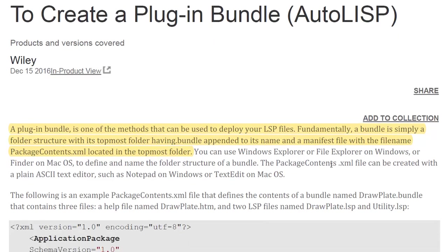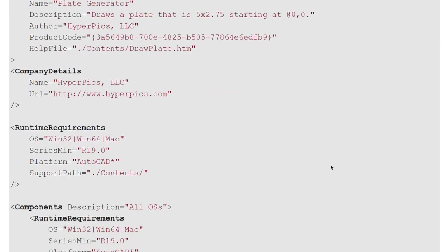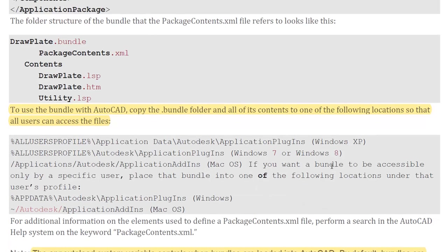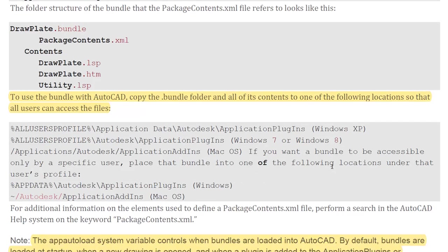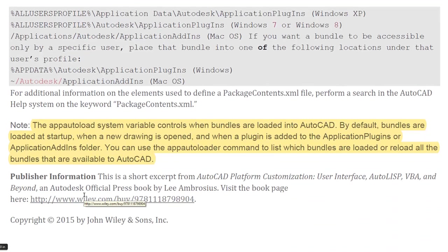The bundle needs a .bundle folder as its first folder. To use the bundle with AutoCAD, copy the bundle folder and all its contents into one of the designated locations — two user profile locations or an app data location. The AppAutoLoad system variable controls when bundles are loaded. By default, bundles are loaded at startup, when a new drawing is opened, and when a plugin is added to the application plugins folder. You can use the AppAutoLoader command to list or reload all available bundles.